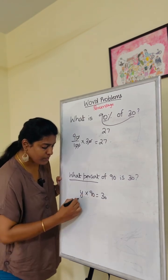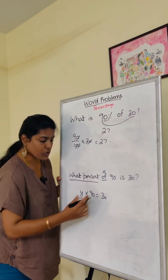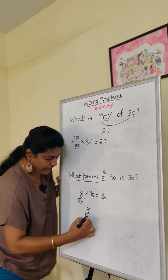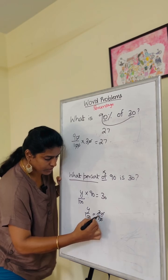What percent? Percent of 90 of multiplication. So of 90 is 30. In the equation, y by 100 times 90 equals 30 divided by 90. So it is 1 by 3.